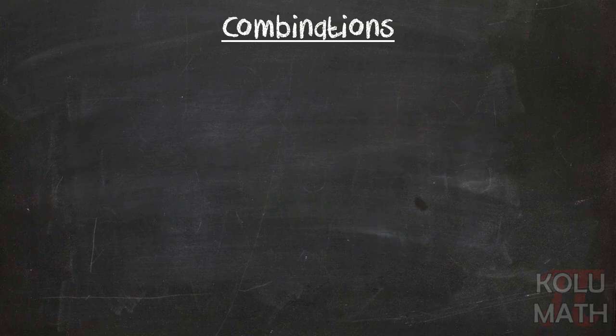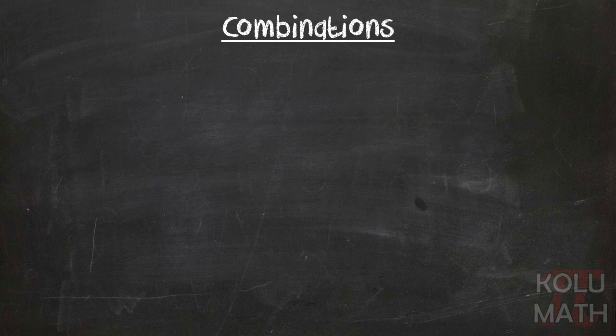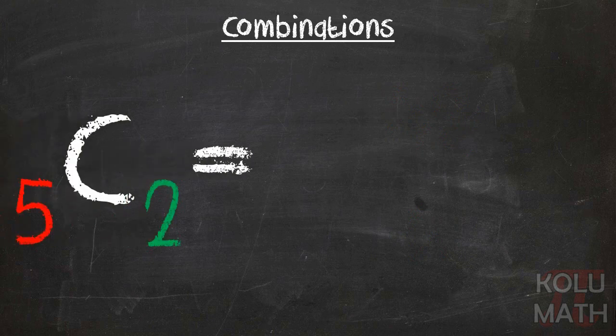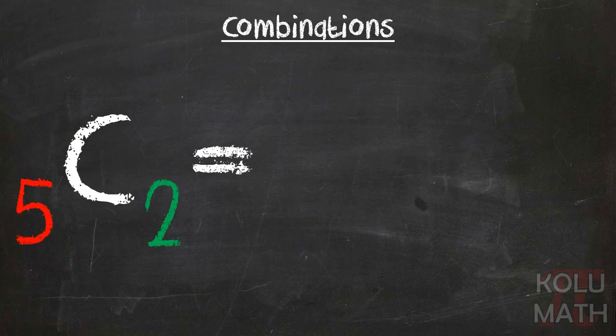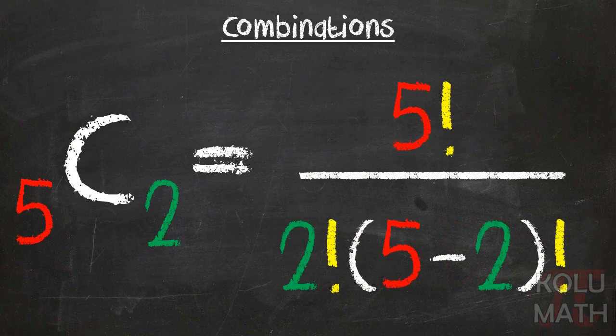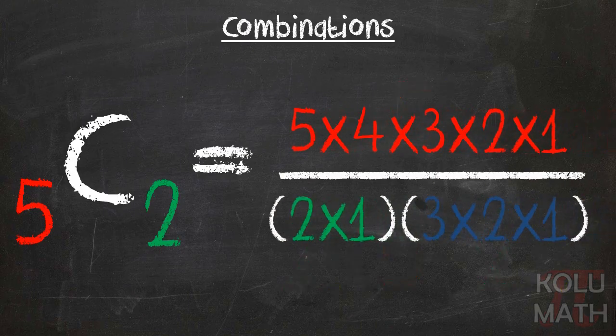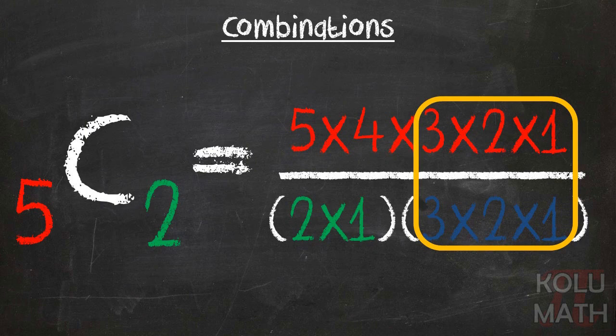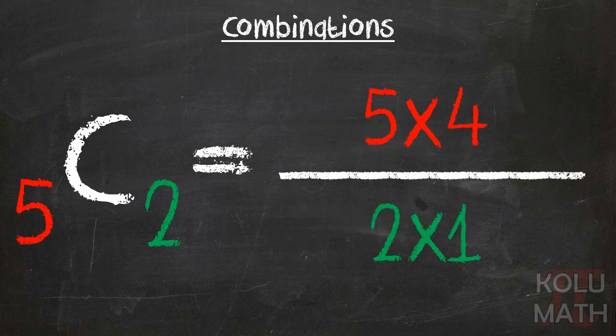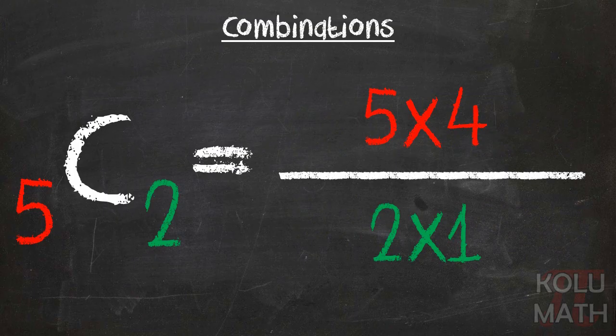We can also look at the math from the earlier problem. We had five different options for our appetizers. There were two that we were going to select for our dish, and we can go ahead and plug those in, go ahead and substitute. And the same deal happens here. We've got these 3 times 2 times 1 over 3 times 2 times 1. So we can remove that back half, and that leaves us with 5 times 4 over 2 times 1. Which is 20 over 2, or 10.